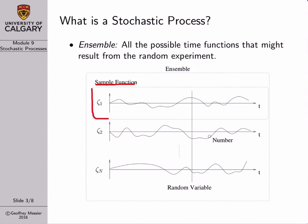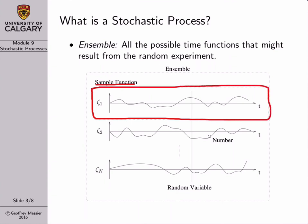If we consider just a single waveform from the ensemble, we call that waveform a sample function, or a realization of the stochastic process. That term refers to just one particular waveform out of the ensemble. Now, there's a very interesting relationship between stochastic processes and random variables.